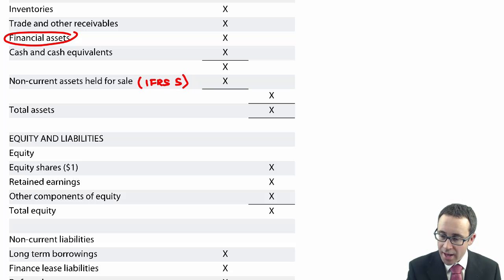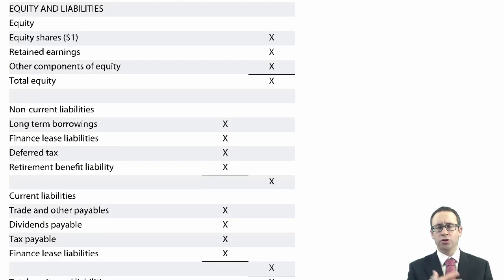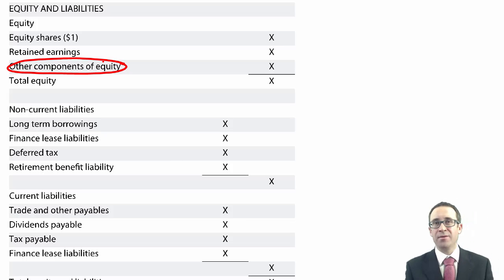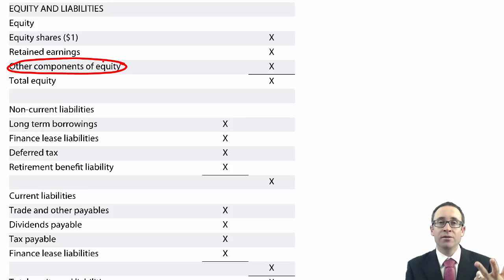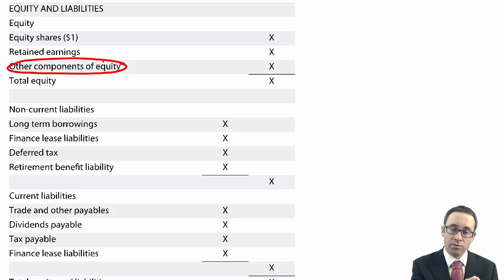In terms of your equity and liabilities, remember within your equity you've got your equity shares, retained earnings, and then your other components of equity — that includes any share premium, any gains on revaluation, and any gains or losses on remeasurement to fair value of financial assets held at fair value through other comprehensive income. It's essentially a dumping ground for anything that has not gone through profit or loss — anything that goes through profit or loss goes to retained earnings; everything else goes to other components of equity.